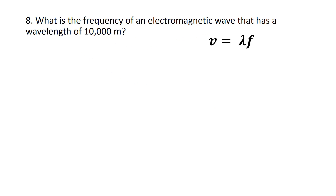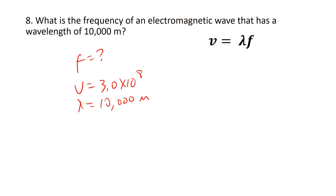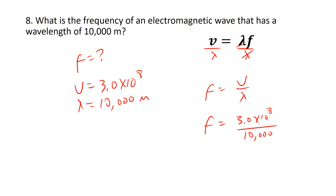What is the frequency of an electromagnetic wave that has a wavelength of 10,000 meters? Since no medium is specified, assume air: v = 3.0 × 10⁸ m/s. Rearranging v = λf gives f = v/λ. Frequency = 3.0 × 10⁸ ÷ 10,000. On the calculator: 3 [2nd][E]8 ÷ 10,000. The answer is 30,000 hertz.